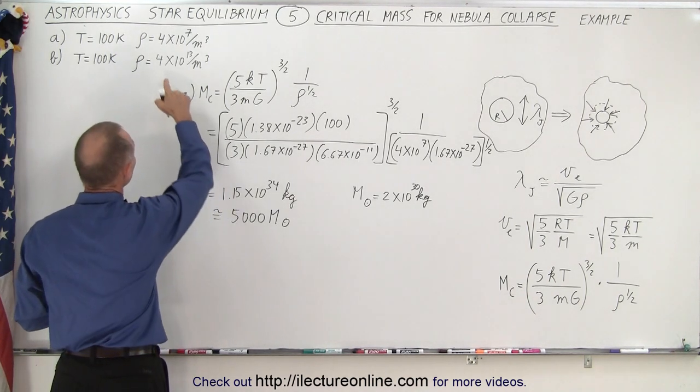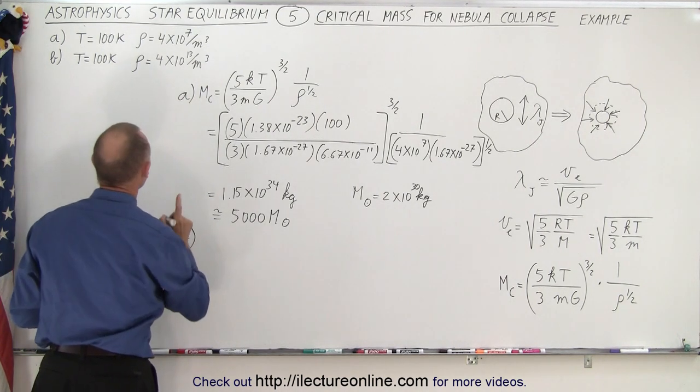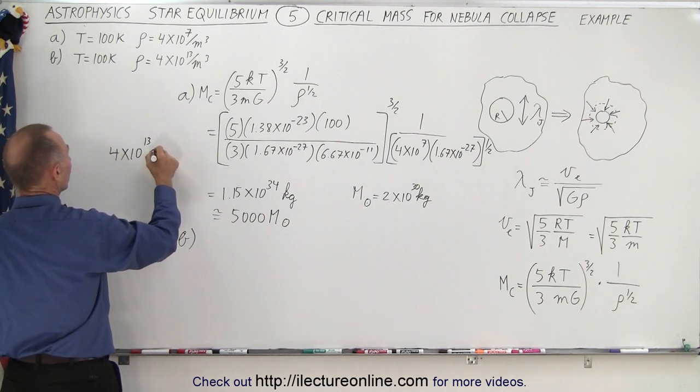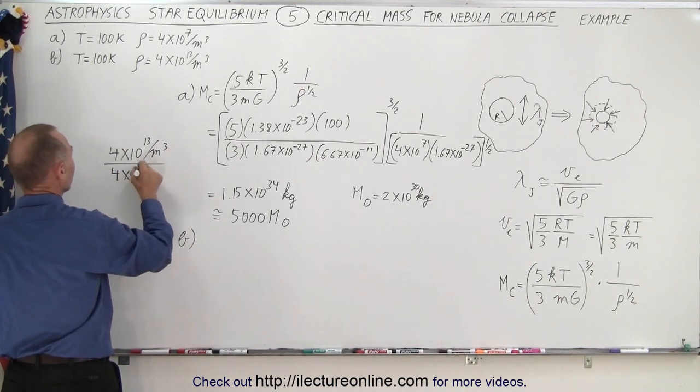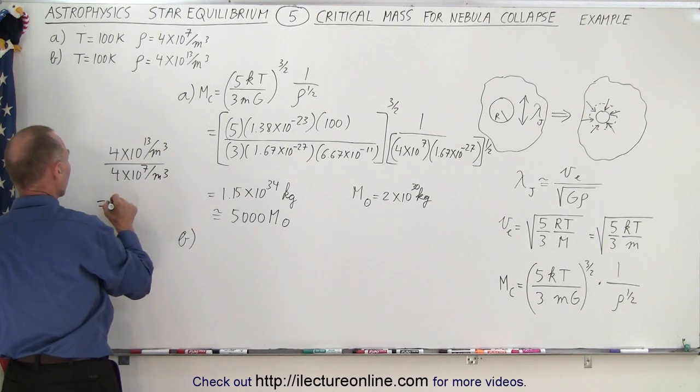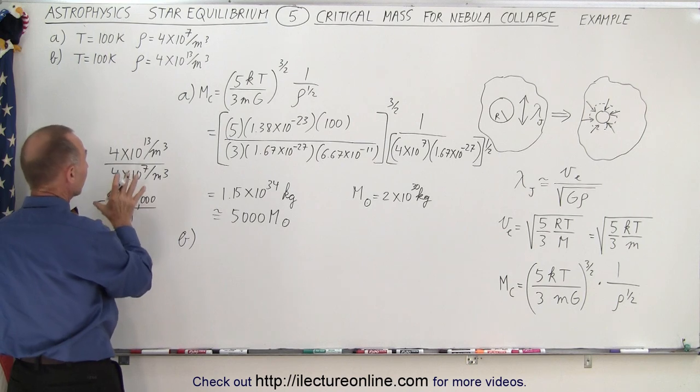So what would it look like if we had a much greater density like this? Well, then you realize, notice that for part B, notice that the ratio of 4 times 10 to the 13 per cubic meter divided by 4 times 10 to the 7th per cubic meter, well, that ratio is a million to one. Like this.